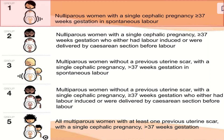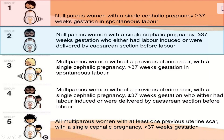Group one of the Robson classification includes nulliparous women with a single cephalic pregnancy of more than 37 weeks gestation in spontaneous labor. Group two differs in the mode of delivery — it includes nulliparous women with a single cephalic pregnancy of more than 37 weeks gestation who either had labor induced or were delivered by cesarean section before labor.